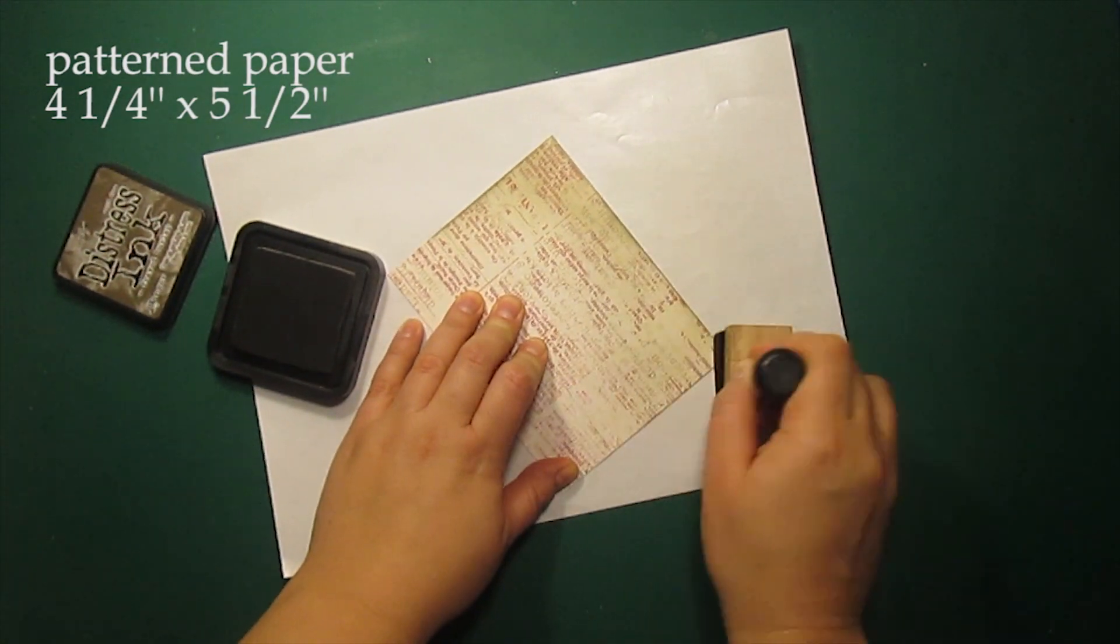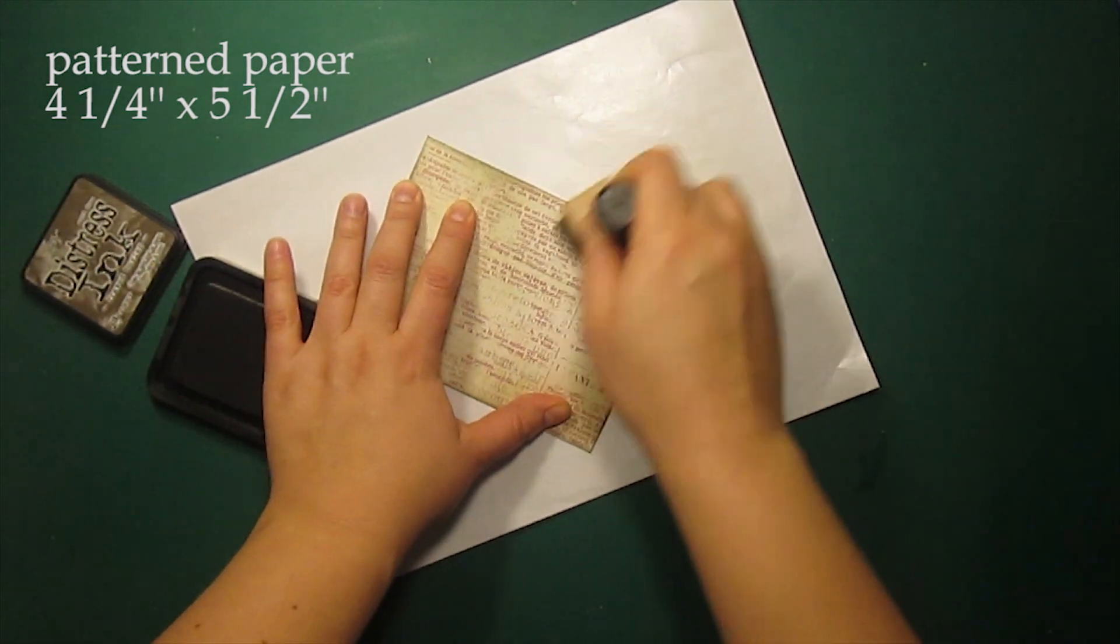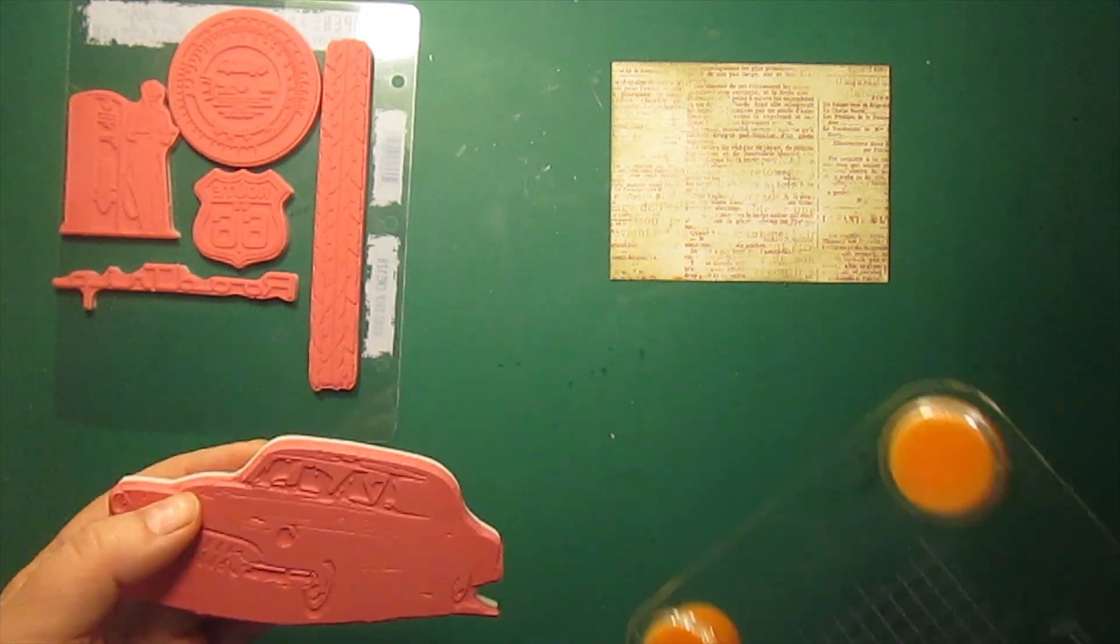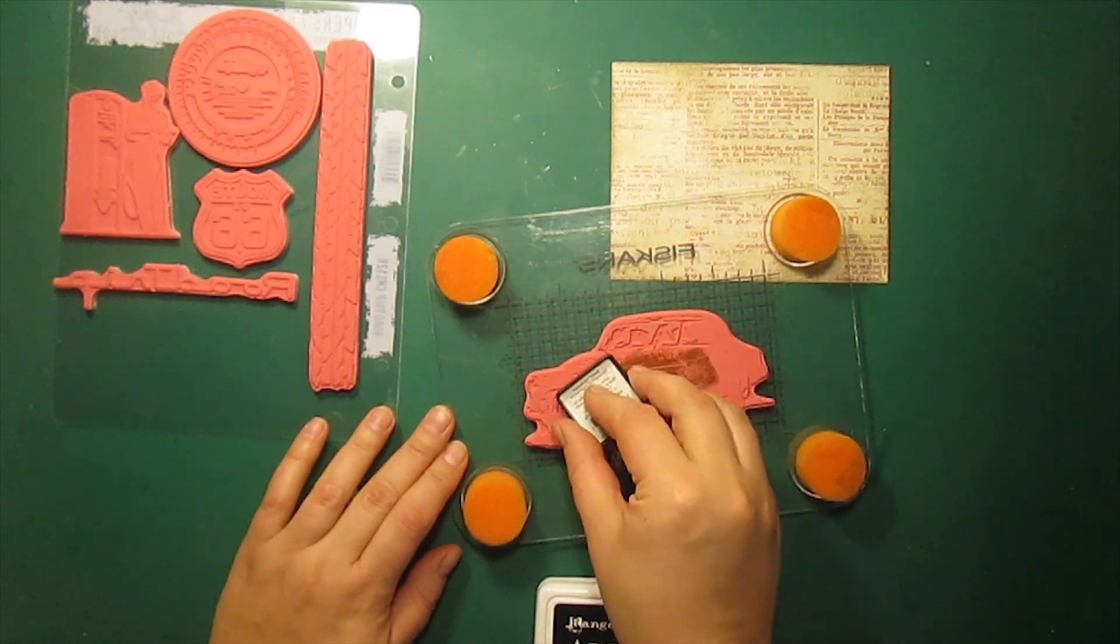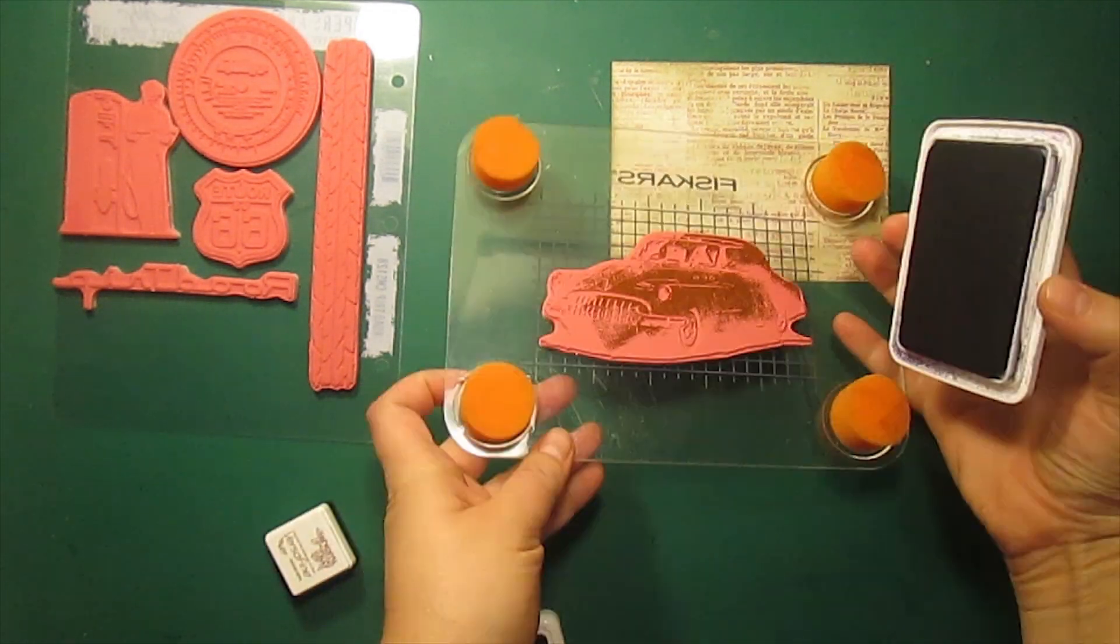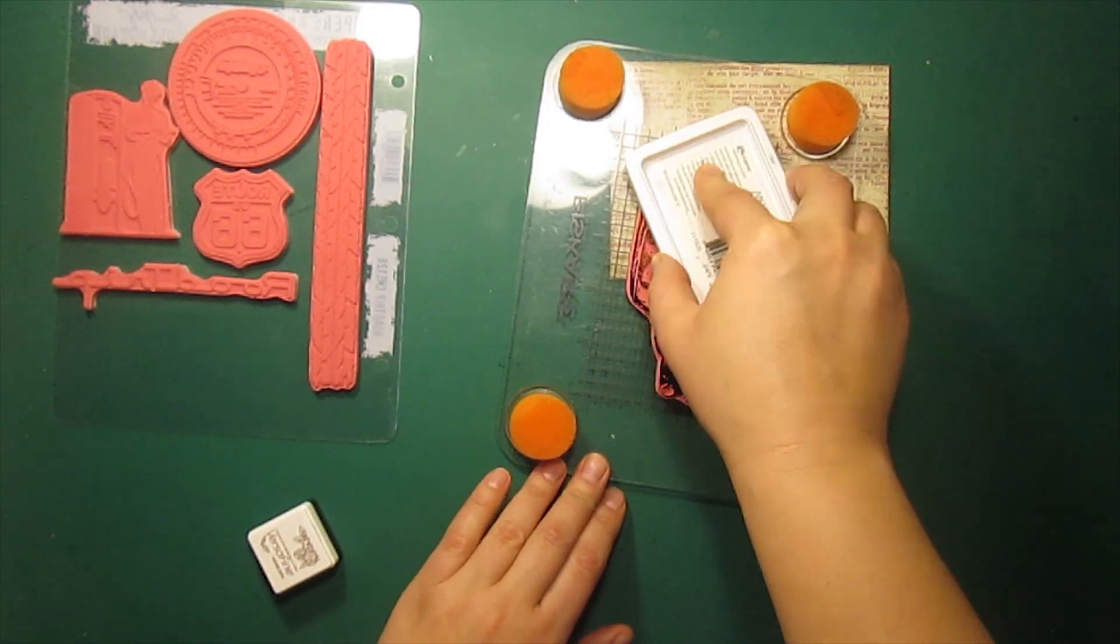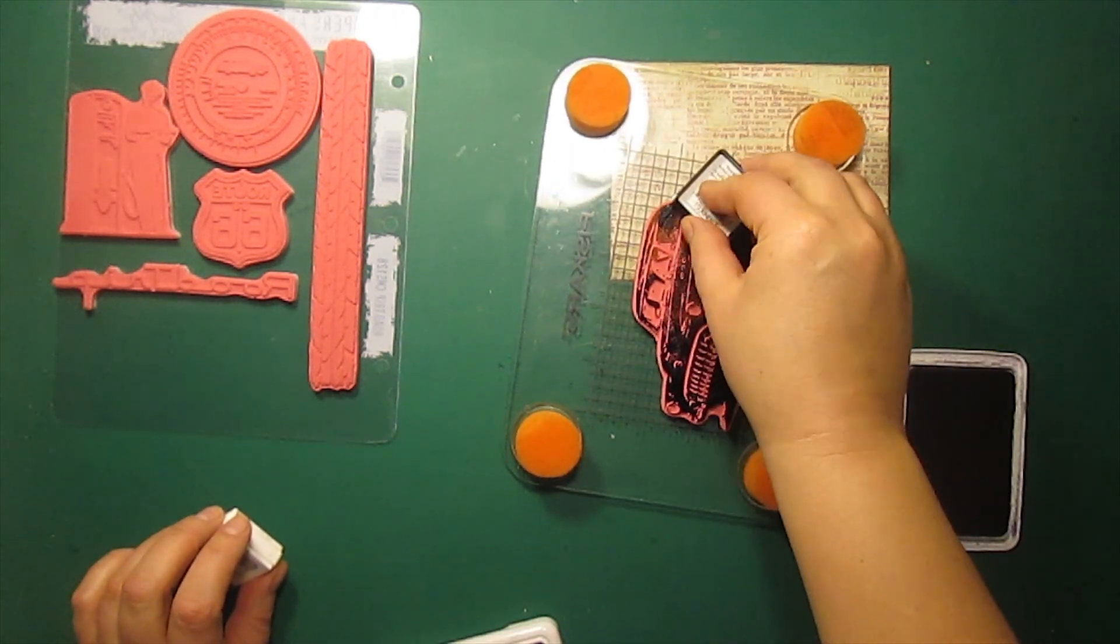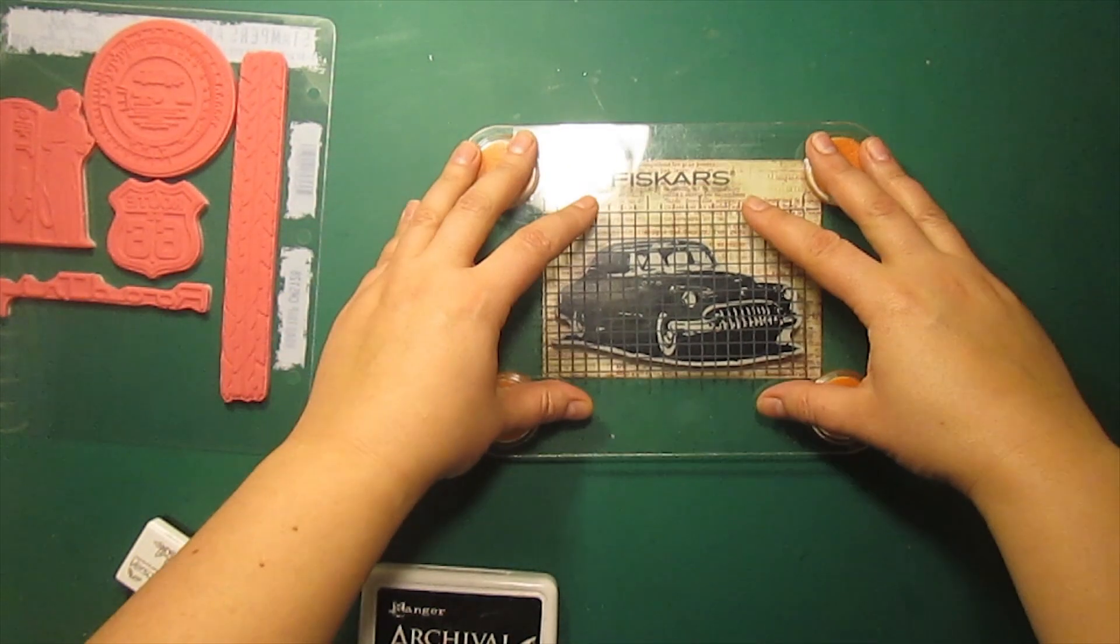I'm starting by applying some Freight Burlap Distress ink onto an A2 size pattern paper with a blending tool. For my focal image I'm going to use a car from Roadtrip Stamp Set by Stampers Anonymous. I'm going to apply two shades of permanent ink onto the stamp, brown and black. I'm starting with brown in the middle, then applying some black closer to the edges and then blending it all with brown again. And I can stamp it now.